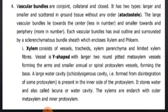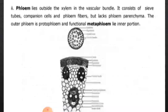As far as xylem is concerned, xylem consists of vessels, tracheids, xylem parenchyma, and xylem fibers. The vessel is Y-shaped, with two large rounded pitted meta xylem vessels forming the arms and smaller protoxylem vessels forming the base. In this xylem, the large meta xylem forms the arms and the smaller protoxylem vessels form the base.